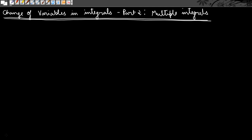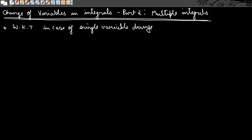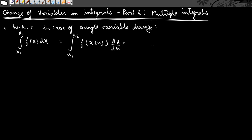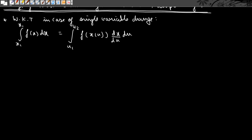We are going to see for double integrals, and that should hopefully give you an intuition as to how the formula holds for higher integrals as well. We start by stating what we already know: in the case of single variable change, which we had seen in part one of this video, the formula for change of variables for the integral of this form was given, and this is what we had seen when the function was dependent on only one variable.